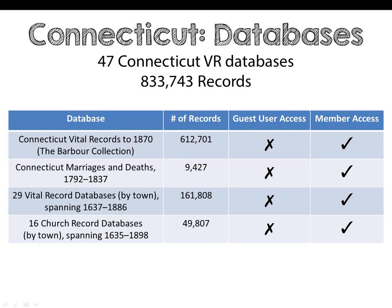On AmericanAncestors, we have 47 vital record databases containing over 833,000 records for Connecticut. This includes the ongoing effort to place the Connecticut Vital Records to 1870 from the Barber collection online. Other databases include 9,400 entries for Connecticut marriages and deaths from 1792 to 1837. We also have 29 vital record and 16 church databases for specific towns, containing over 200,000 entries.